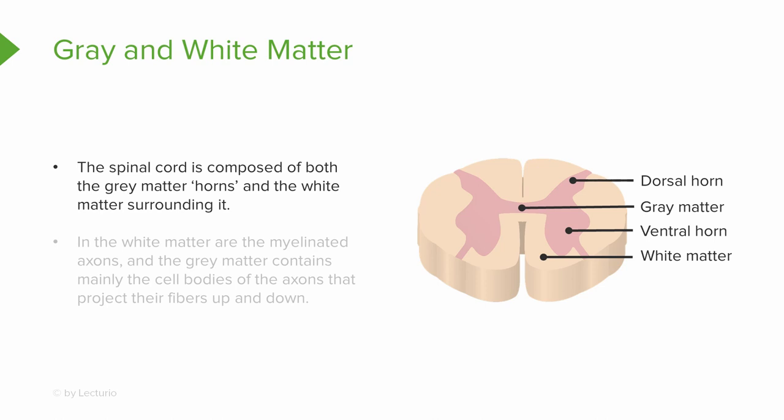I've got some things labeled for you. You see the dorsal horn, and you can clearly see it's labeled gray matter — all that's part of it — and the ventral horn. So the dorsal horn and the ventral horn make up the gray matter part of the spinal cord. The white matter is everything else around it; it kind of looks like a butterfly to me.